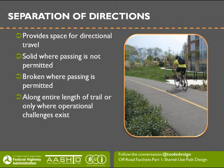Most paths designed are two-way paths. The new guide provides more guidance on center lines, especially on where to use these lane lines. Solid lines are used where passing is not permitted—for example, where there are restricted sight lines or low design speeds. Broken lines are used when passing is permitted, and you can use them along the entire length of the path, only where operational challenges exist, or not at all.